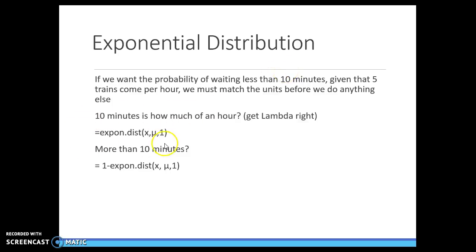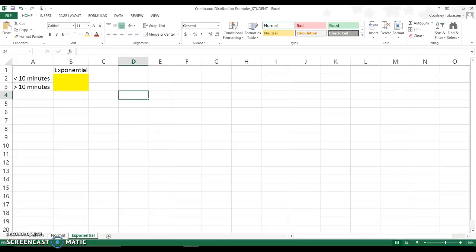Again, we have our distribution. This is how we will put it into Excel. And if we are curious about more than 10 minutes, it's going to be 1 minus the expon.dist in Excel.